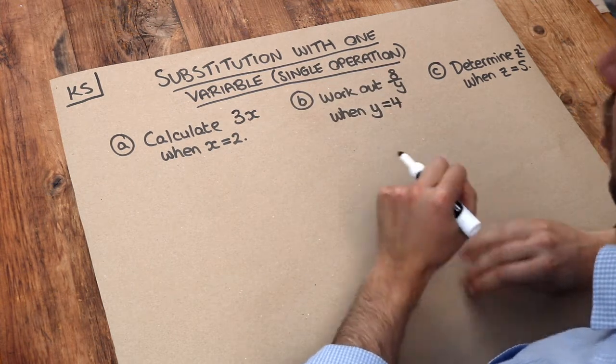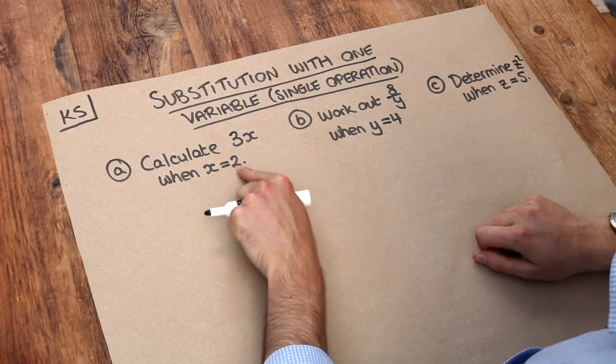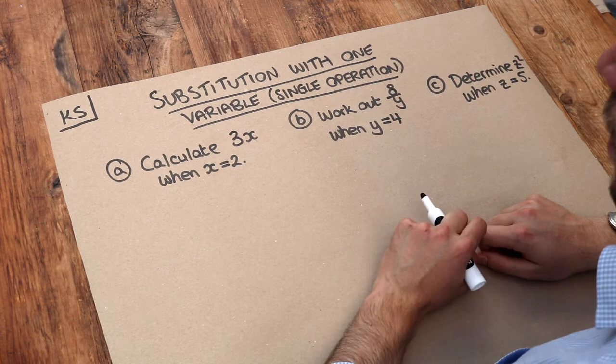We use substitution when we want to find the value of an algebraic expression but we're given the value of each of the variables involved in that expression.